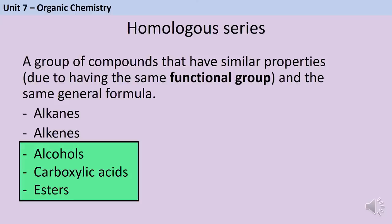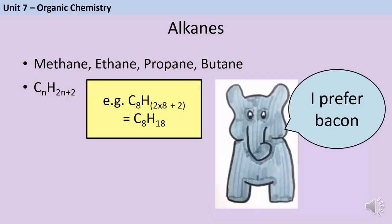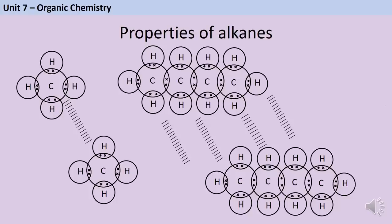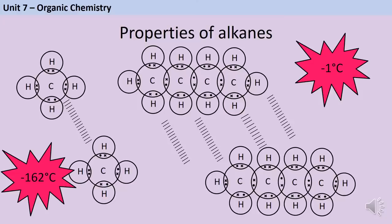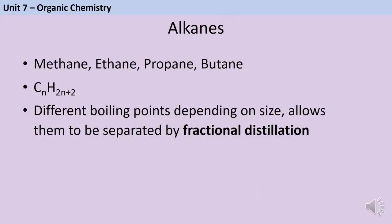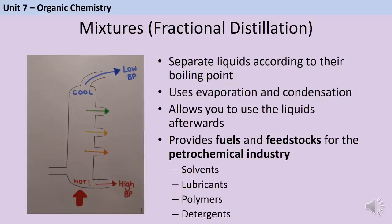Combined science students need to know alkanes and alkenes; triple science students also need alcohols, carboxylic acids and esters. The first four alkanes are methane, ethane, propane and butane — remember these with 'most elephants prefer bacon.' The general formula is CₙH₂ₙ₊₂, so 8 carbons gives 2×8+2=18 hydrogens. Alkanes are small covalent molecules with weak intermolecular forces. As alkanes get bigger, boiling point and viscosity increase and they become less flammable.